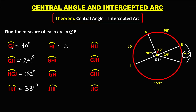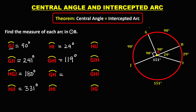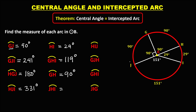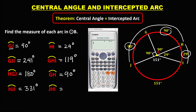Arc HI is equal to 29 degrees. For arc GHI, we add 90 plus 29, which equals 119 degrees. Arc GH equals 90 degrees. For arc GHIJ, we add 90 plus 90 plus 29, which equals 209 degrees.